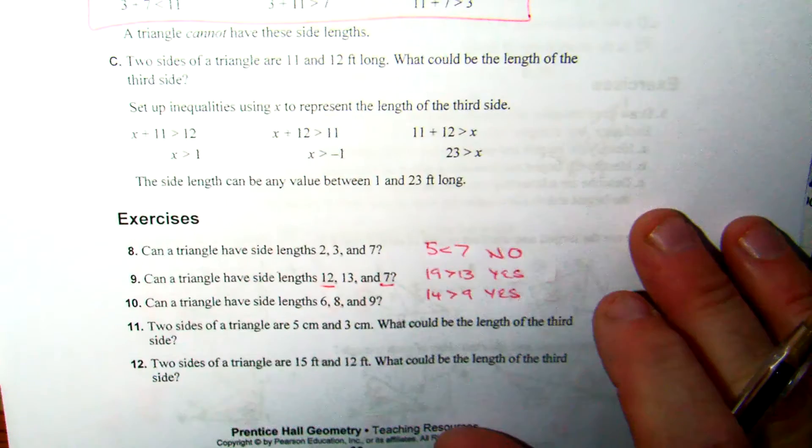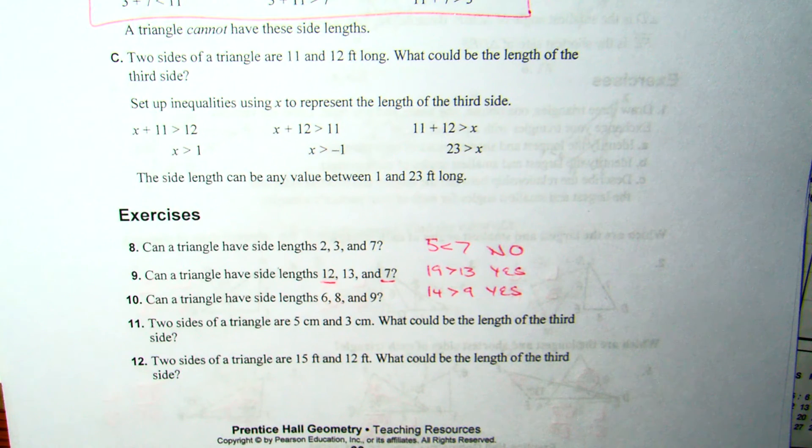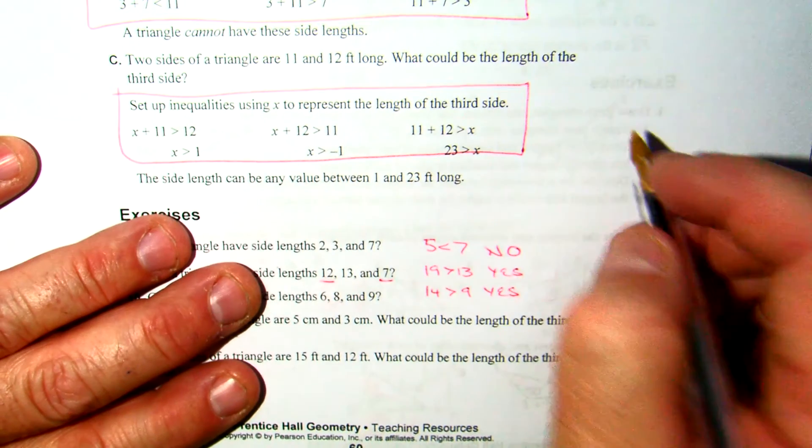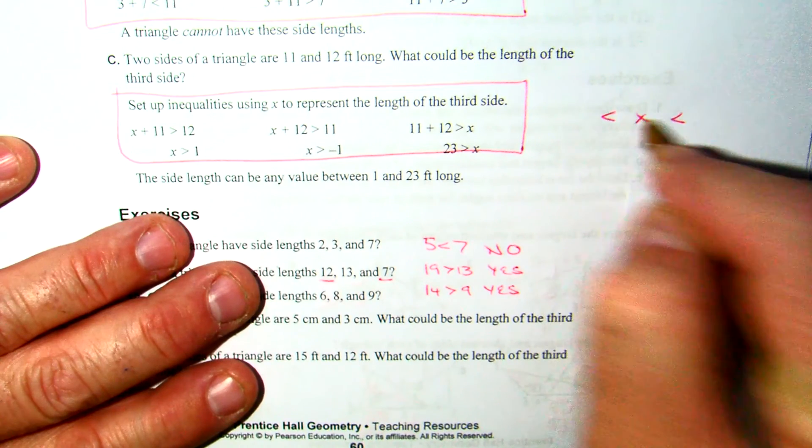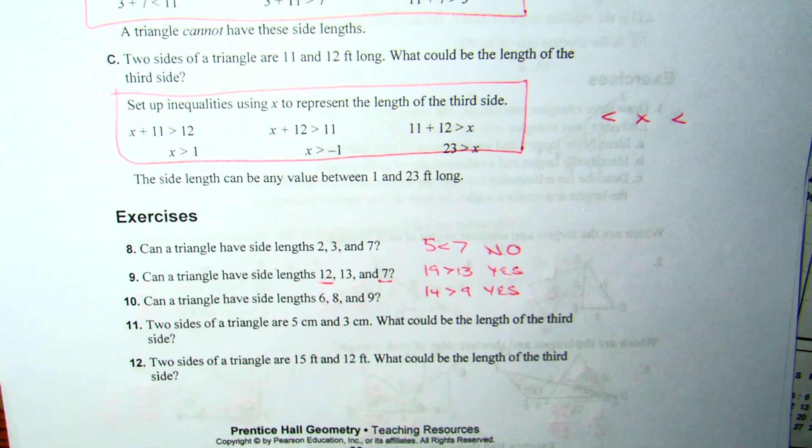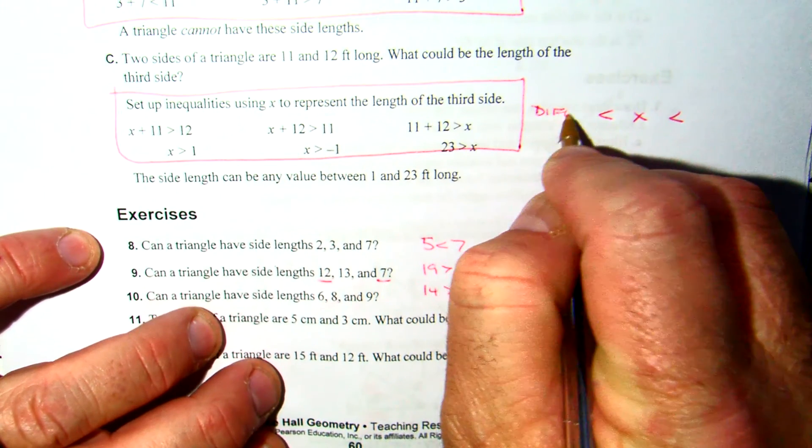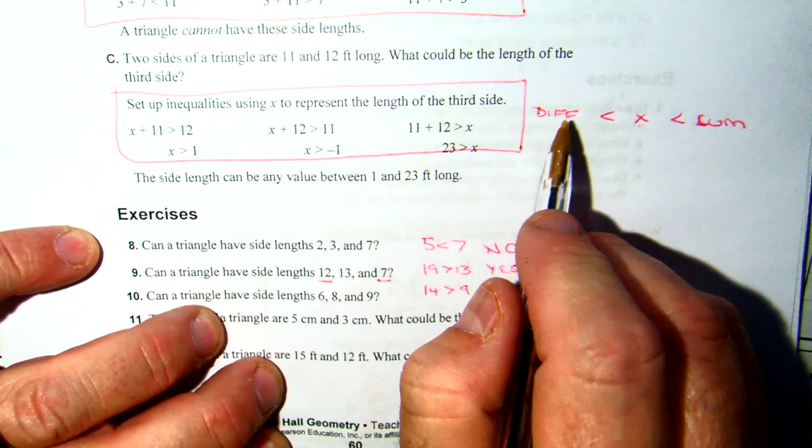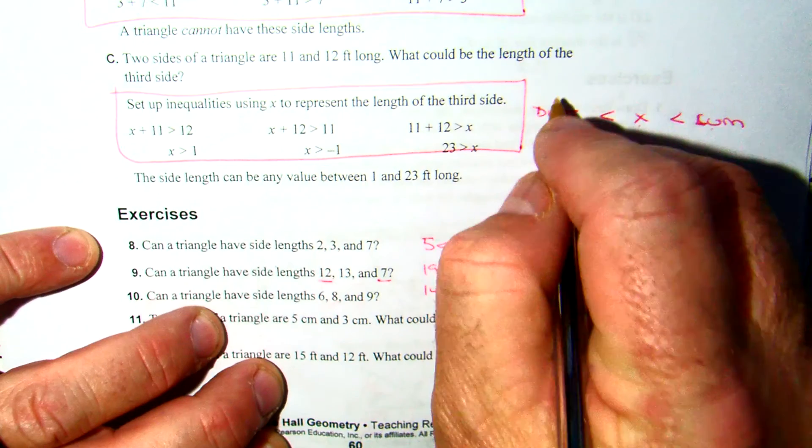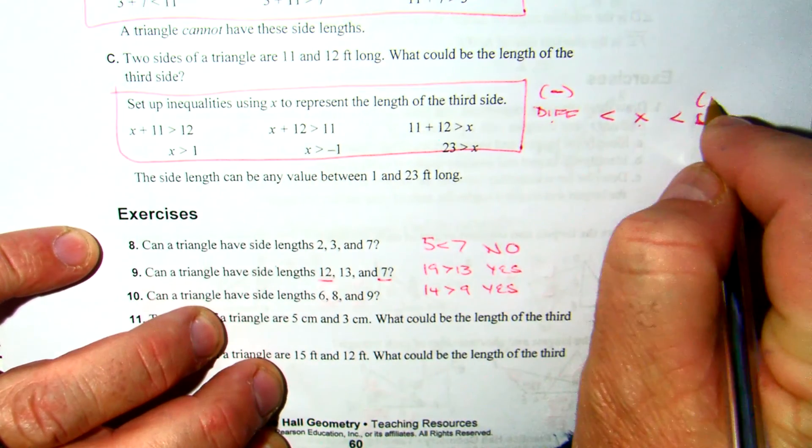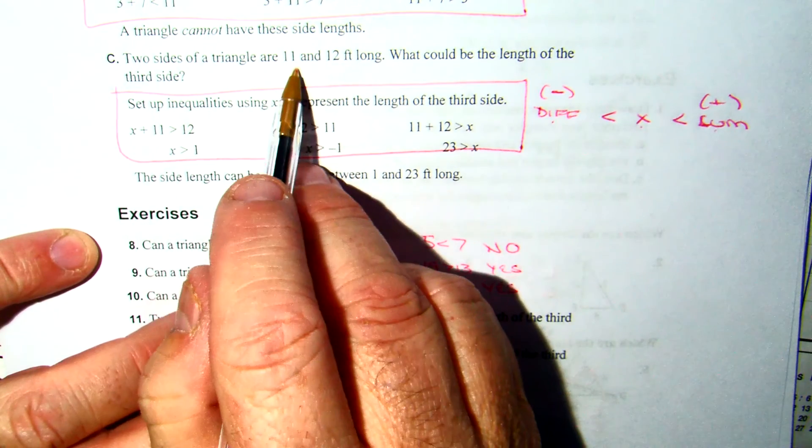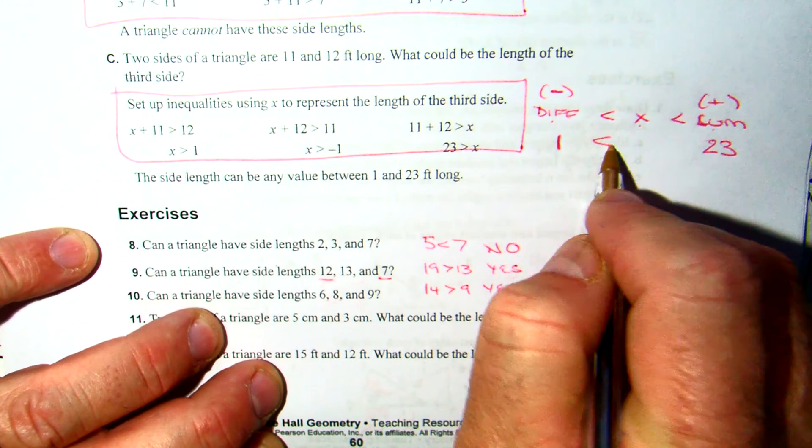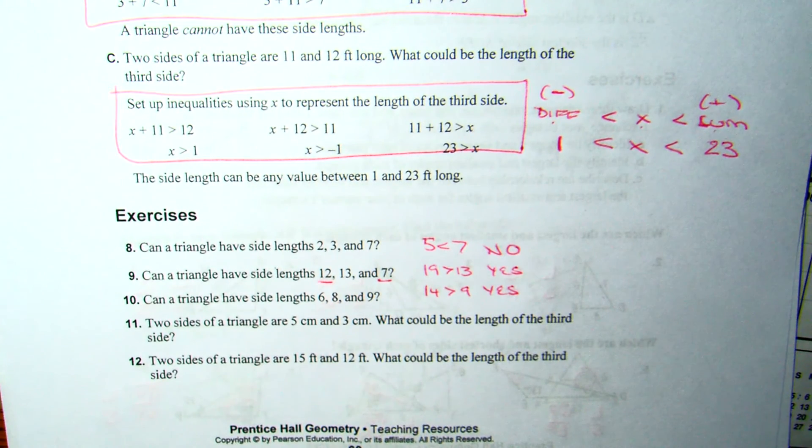Now the second part of this. Two sides of a triangle are 11 and 12 feet long. What could be the length of the third side? Again, they're doing all three. I'm telling you it's not necessary. All you do is create what is called a compound inequality. We'll practice these when we return home from break. You put your variable in the middle, whatever you choose. The difference on the left and the sum on the right. The difference, of course, comes from subtraction. The sum comes from addition. So if I look at this, I've got 11 and 12. 11 plus 12 is 23. 12 minus 11 is 1. That means my third side can be any length between 1 and 23.